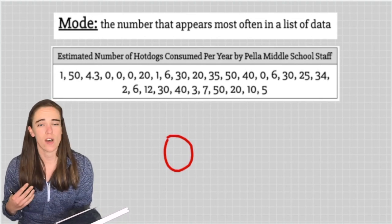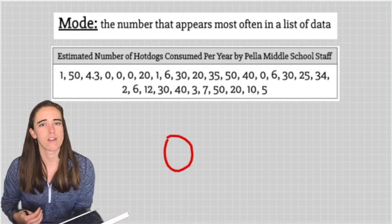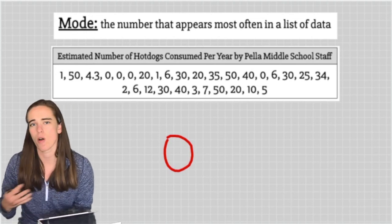It is possible to have multiple modes. So if I had another number that was also repeated four times, we could have a mode of zero and a mode of 20.